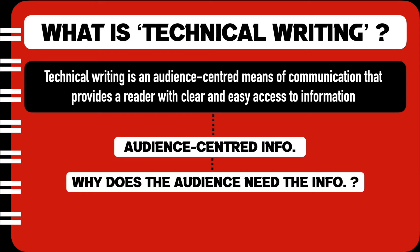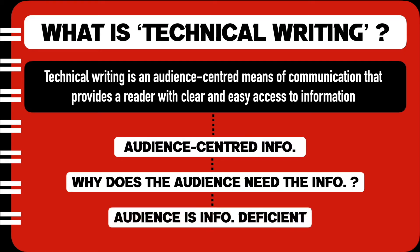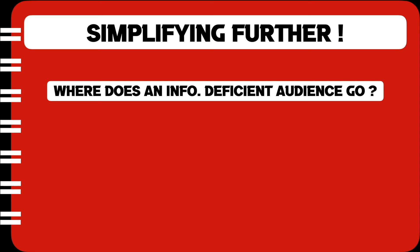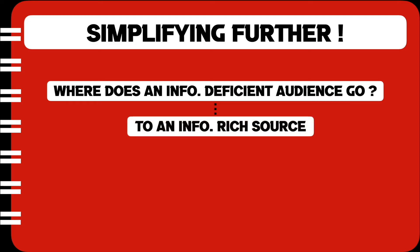So the next question arises: why does the audience need any information? Well, because at times the audience is information deficient. For example, if my laptop does not respond and does not start, then mostly I do a Google search to figure out what I can do to fix my laptop on my own. So when we don't have information, where do we go as an information-deficient source? We generally end up going to an information-rich source like, as I said, Google or YouTube.